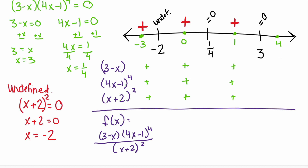For the last interval, we substitute in 4. 3 minus 4 is negative. 4 times 4 is 16 minus 1, which is 15 to the power of 4 — that's positive. And 4 plus 2 is 6 squared — also positive. In the numerator we have a negative times a positive, divided by a positive, which results in a negative. So this last interval is negative.